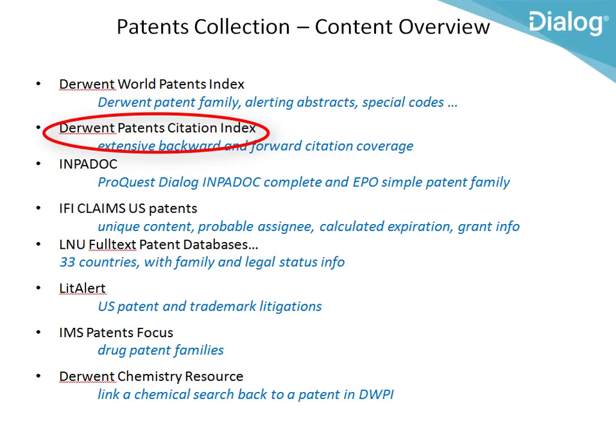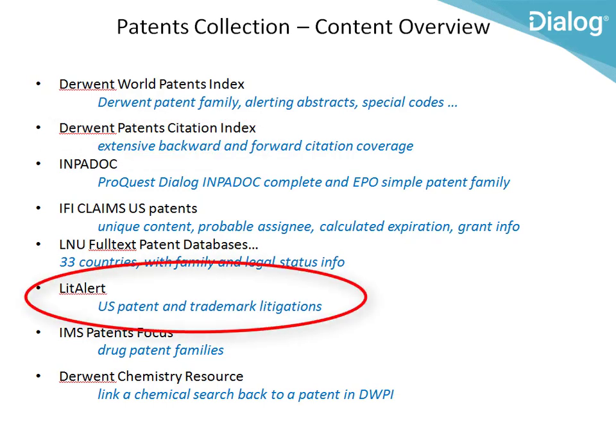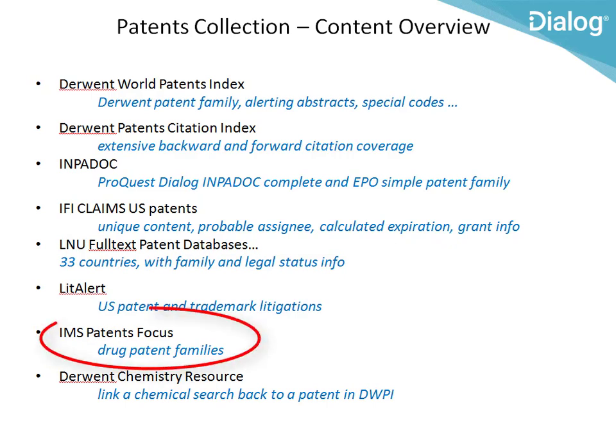Derwent Patent Citations Index is specially designed for citation searching. There's also LID Alert, which is the only database where you can find out if any lawsuits have been filed in US federal courts concerning any US patents — US trademark lawsuits are also covered here. And IMS Patents Focus is a great database for pharmaceutical patents, letting you look them up by trademark or generic names — information not found in the actual patents — as well as detailed status of related drug patents across many countries. The company that makes this database stopped adding to it recently, but it's still a great resource.